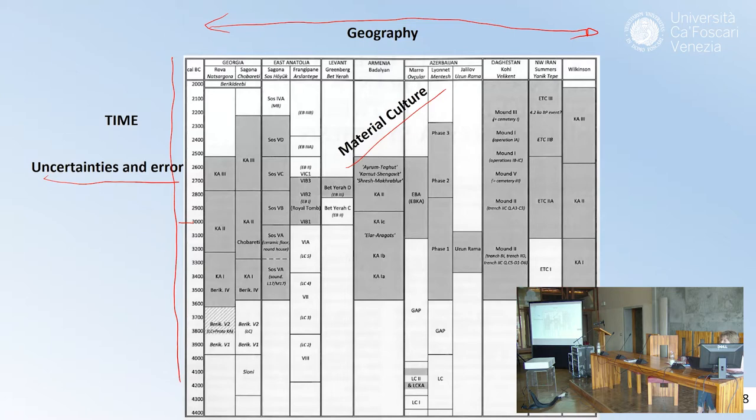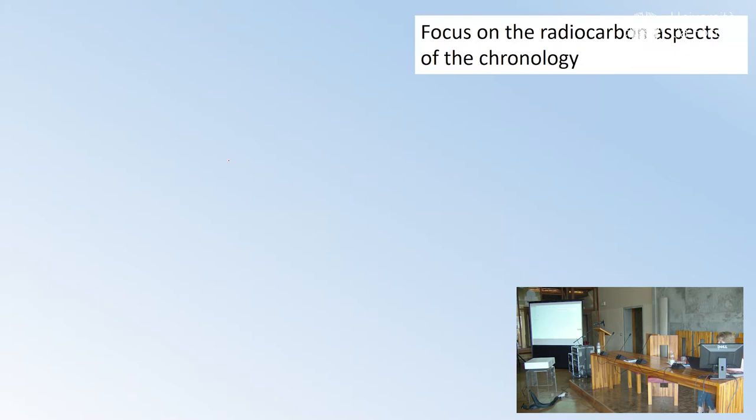Geography is less prone to errors because the site is where it is. But material culture is very much connected to interpretation. This straight line that sometimes looks synchronous between the sites should be more fuzzy, more less well-defined. The scheme is useful because it helps us to put things in order and see where we are missing data, where we are missing information.